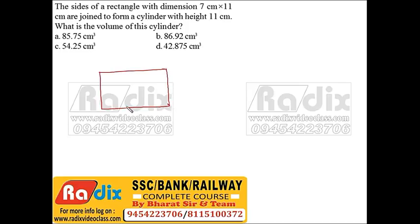The sides of this rectangle are 7 and 11. Now it is folded to form a cylinder with height 11, so it would be like this. In this case, the height of the cylinder would be 11.